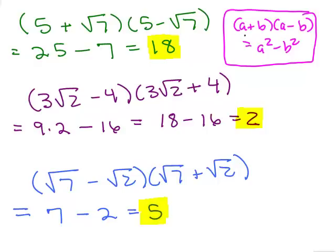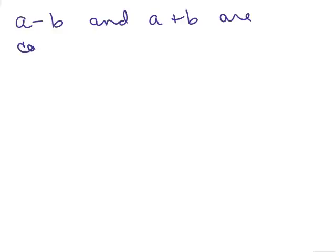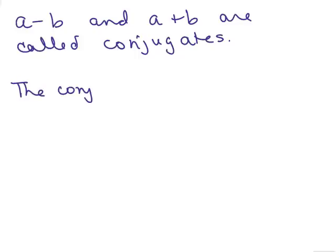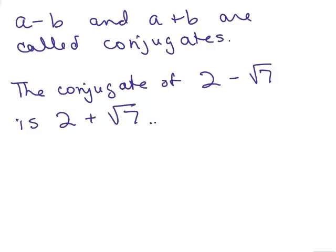As it turns out, a plus b and a minus b are called conjugates of each other. So 5 plus square root of 7 and 5 minus square root of 7 are conjugates. 3 square roots of 2 minus 4 and 3 square roots of 2 plus 4 are conjugates. When you multiply conjugates that contain square roots, you end up getting a rational number. For example, the conjugate of 2 minus square root of 7 is 2 plus square root of 7.